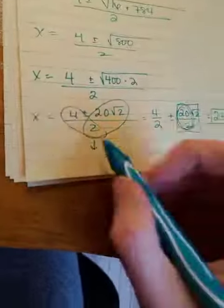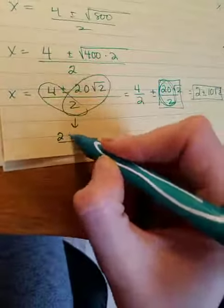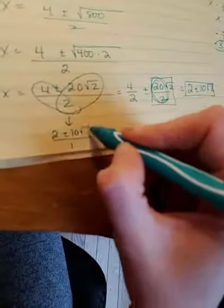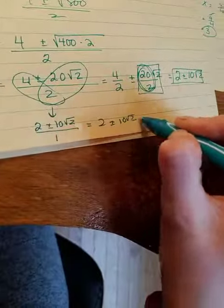You could also just say, okay, what do 4, 20, and 2 all have in common? They have 2 in common. So 2 divided by 2 is 1. 4 divided by 2 is 2. 20 divided by 2 is 10. Anything divided by 1 is itself. And you get the same answer.